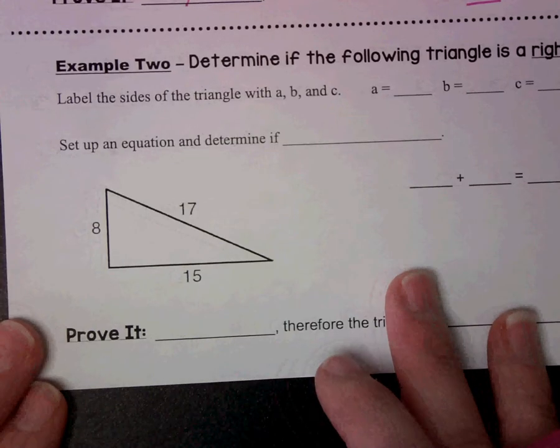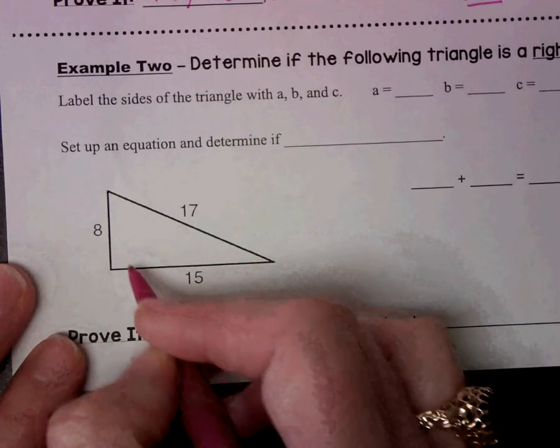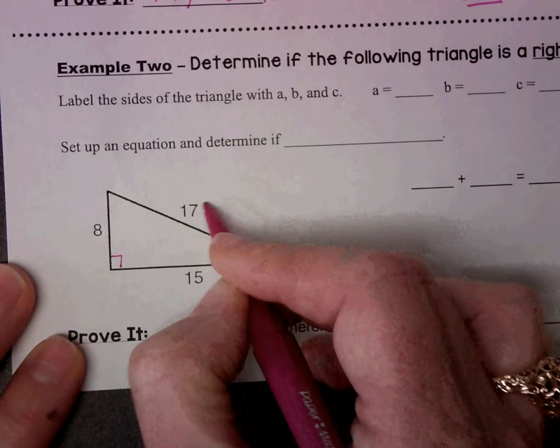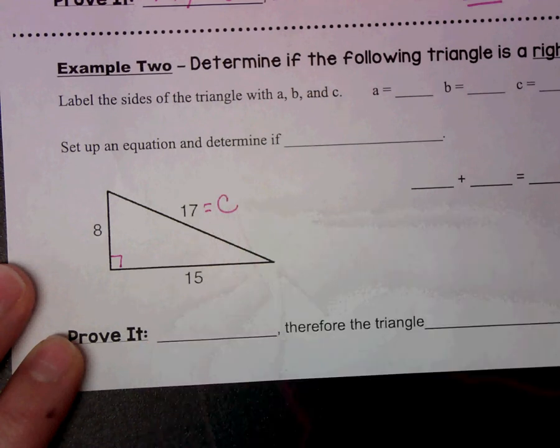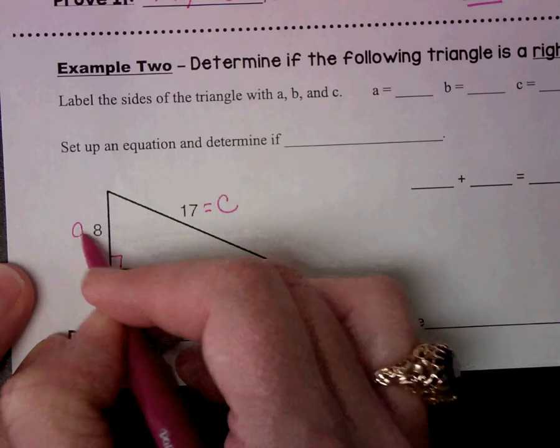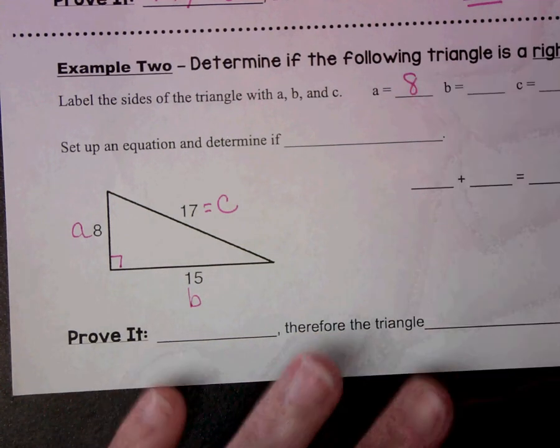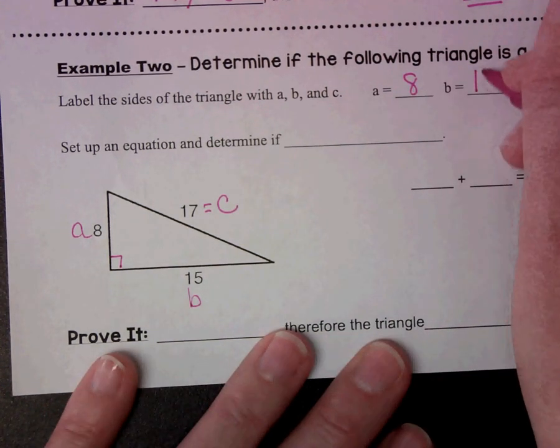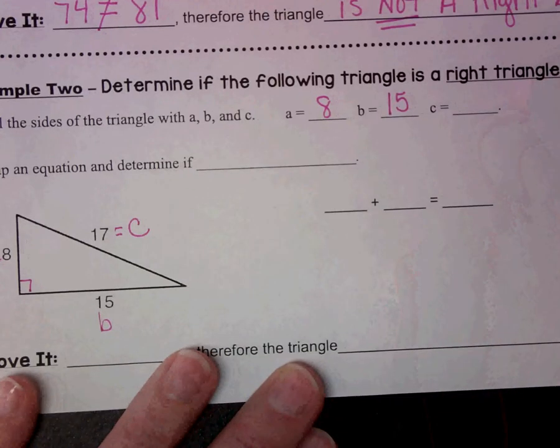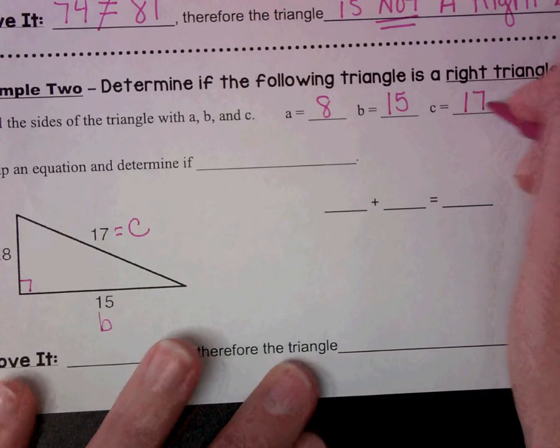So let's look at the next example. Let's label our sides. Here would be my right angle. This is my longest side, so it has to be C. That means this would be A and B. So 8, A is equal to 8, B is equal to 15, C is equal to 17.